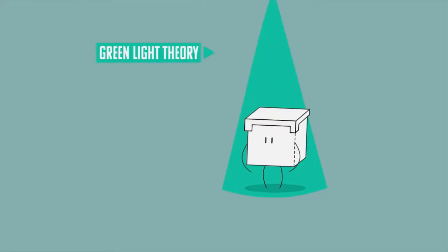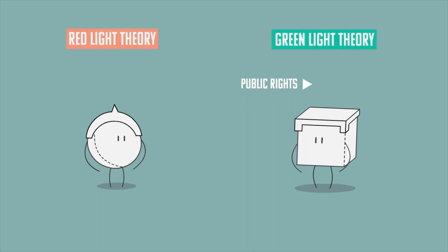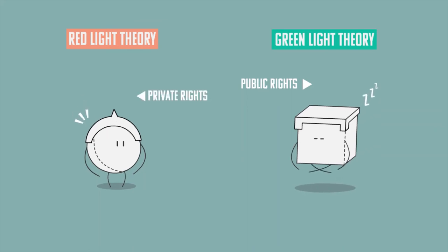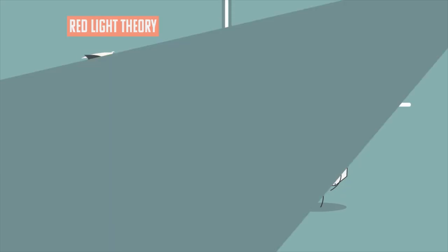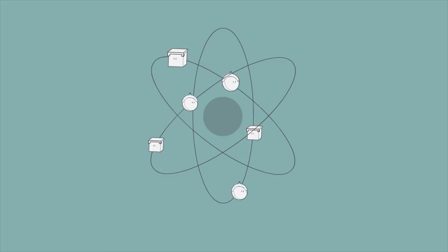Green Light Theory focuses on public rights rather than private rights or individual interests, as in Red Light Theory. Both theories have their own merits and pitfalls. Most legal systems are therefore a combination of these two theories.